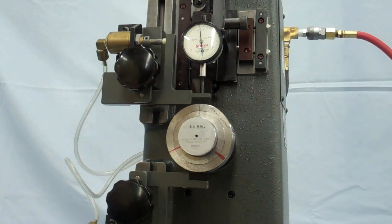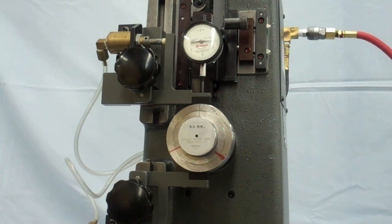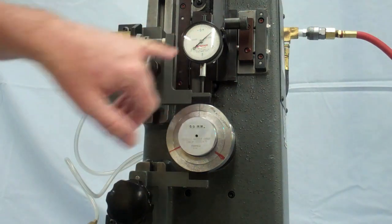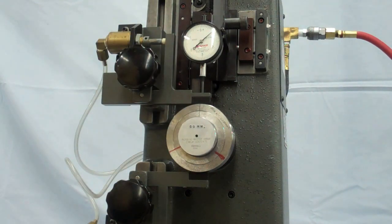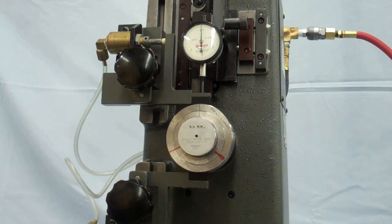Interchangeable arbors and backstops position the bearing correctly on the arbor. Some of the determining factors for the backstops and arbors are the bearing thickness and its configuration.